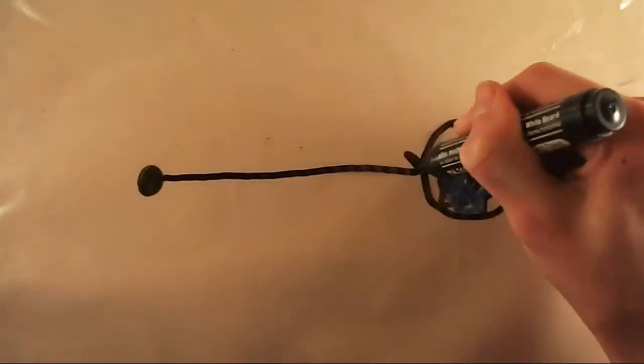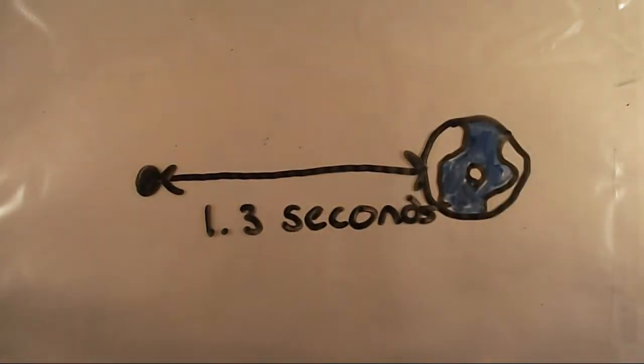When you look up at the moon, you see the moon 1.3 seconds ago. That means if the moon was to blow up, it would take 1.3 seconds to see this because the light has to travel from the moon to us at just under 300 million meters per second.